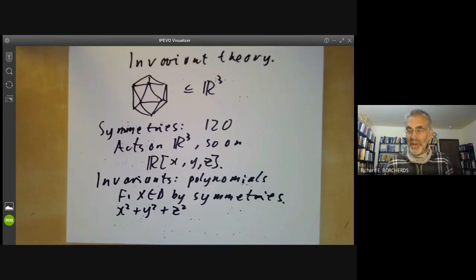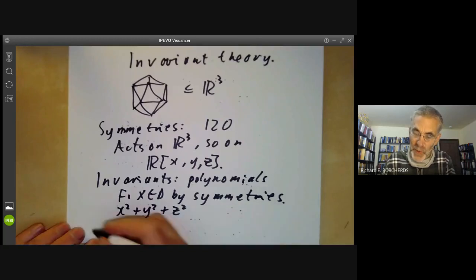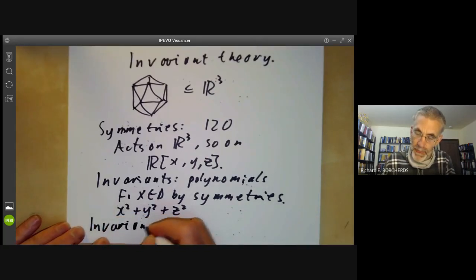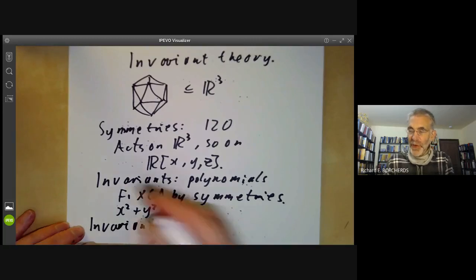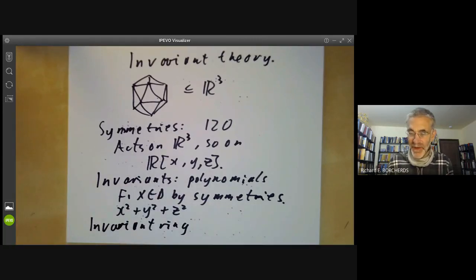You can ask, what are the other invariants? The invariants obviously form a ring called the invariant ring, because the sum and product of two invariants is obviously invariant.